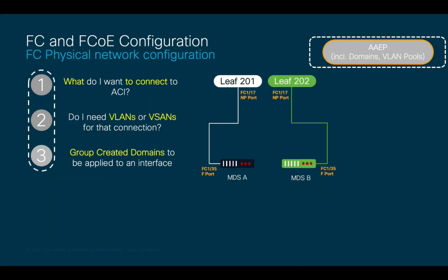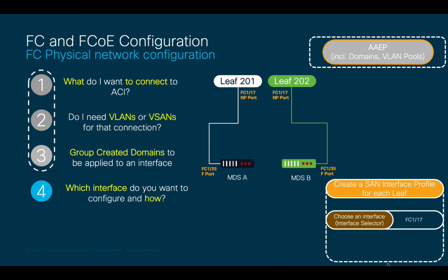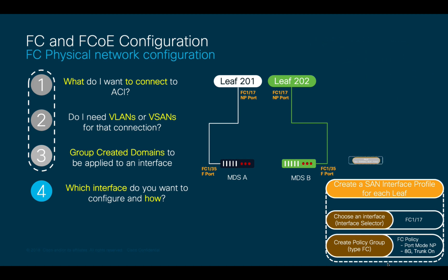Now, moving to step 4, we need to specify which interface we want to configure and how. Therefore, I will create a SAN interface profile following our naming convention best practices, and we will include our Fiber Channel port 1/17. We will also create a Fiber Channel policy group, where we will include a set of Fiber Channel policies such as the port mode. In this case, we will set it to NP since the leaf node is working in NPV mode, we'll also set the speed to 8GB, and enable trunking. Finally, and most importantly, we will add our AEP from step 3 to this Fiber Channel policy group.